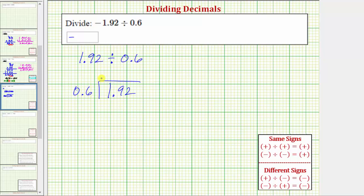The first thing to recognize here is that the divisor is a decimal, and we want the divisor to be a whole number. To make 0.6 a whole number, we would have to move the decimal point to the right one place to here,